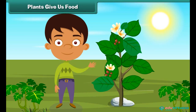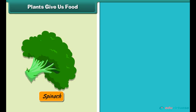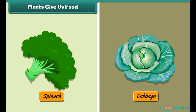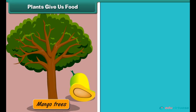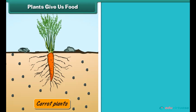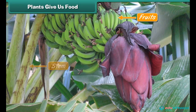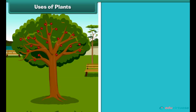Plants give us food. We eat different parts of different plants as food. For example, we eat the leaves of spinach and cabbage plants. We eat the fruits of mango and pineapple trees. We also eat the roots of carrot and radish plants. We eat the fruits, stem, and flowers of the banana tree.